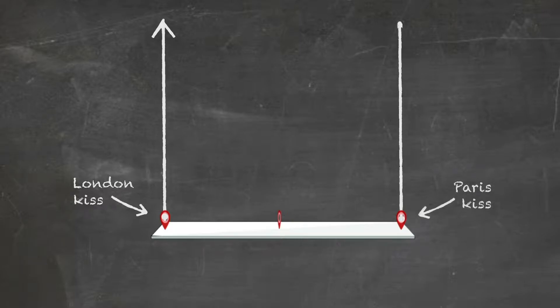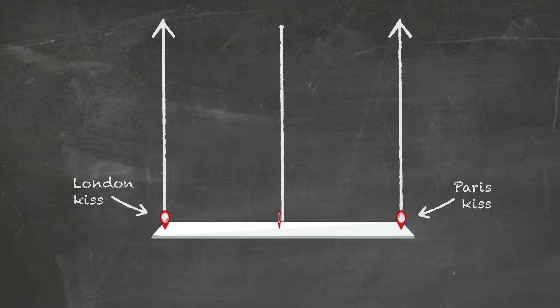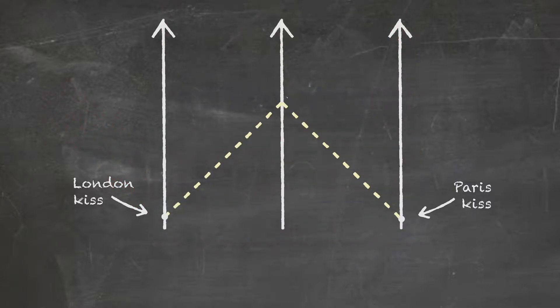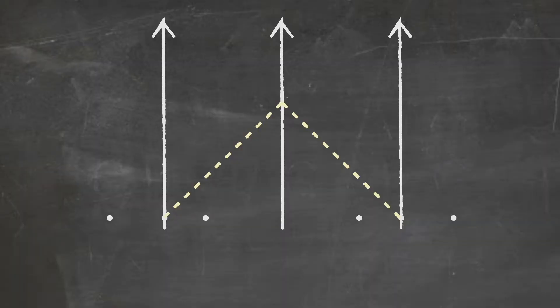Light signals are emitted the moment each event occurs — the first kiss in Paris and the first kiss in London — and they arrive at the midpoint between the two events at the same time. In fact, there are lots of events that would arrive at that same midpoint at the same time.